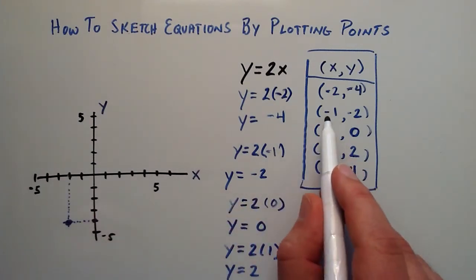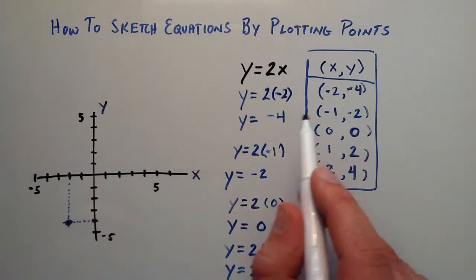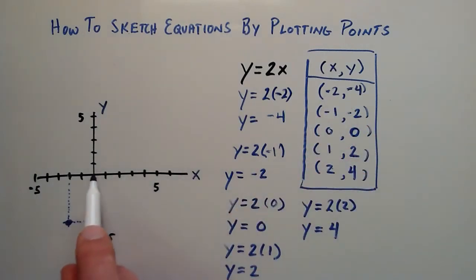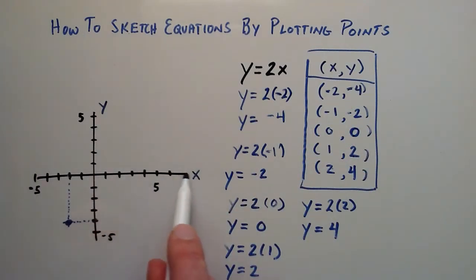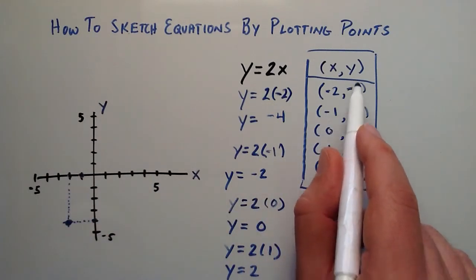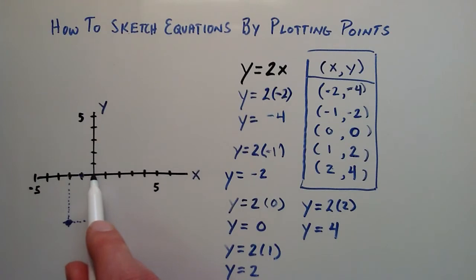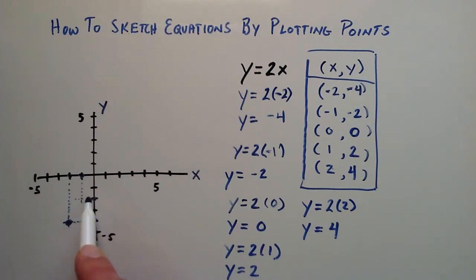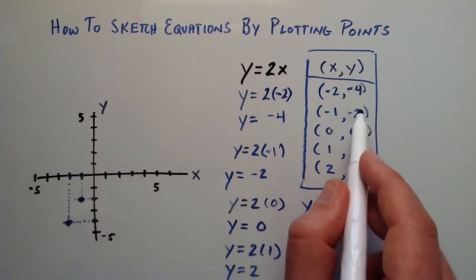Now let's look at the point negative 1, negative 2. Negative 1 is the x component, so starting at 0 on the x-axis, we go to negative 1. Negative 2 is the y component, so we go down to negative 2. We draw our projections, and where they cross is the point negative 1, negative 2.